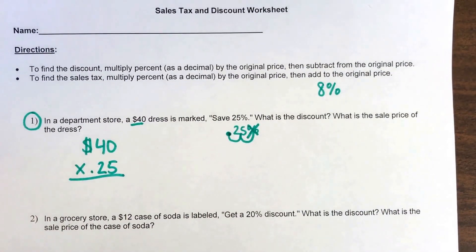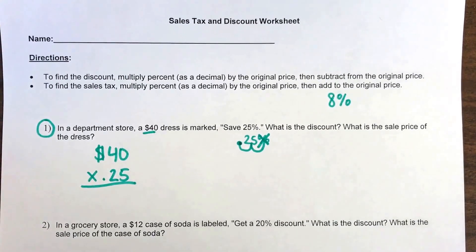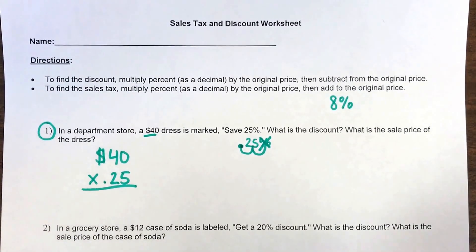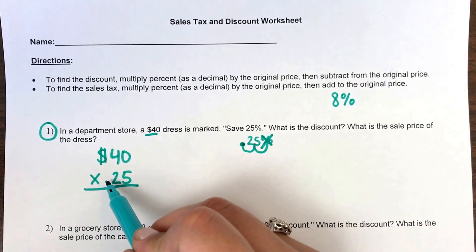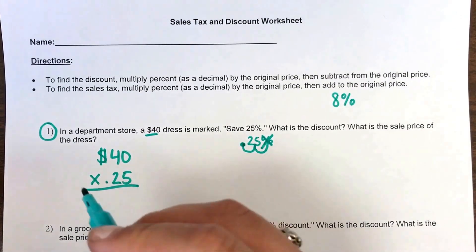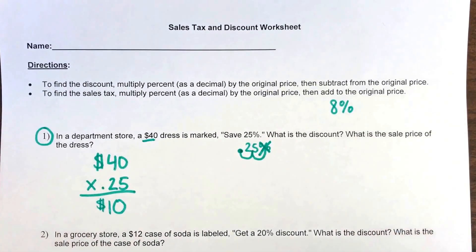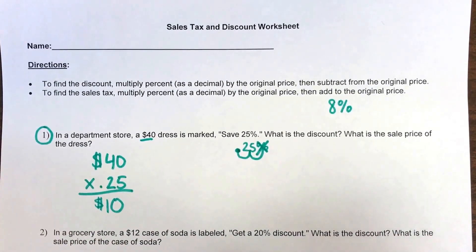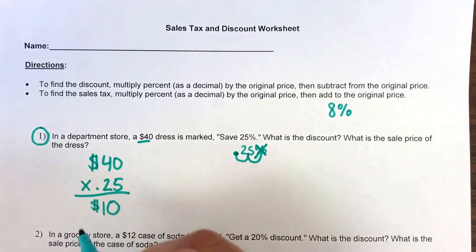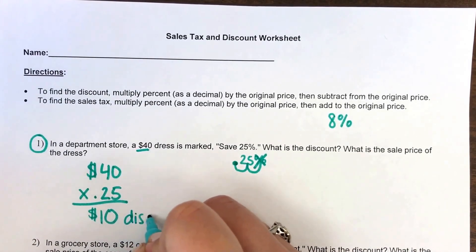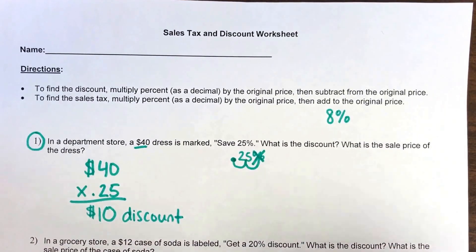Go ahead and show your work by doing the multiplication. If you use a calculator, do 40 times 0.25 — make sure you use that decimal — and you should come up with $10. Now that is not the price of the dress. That $10 is your discount — the money they're telling you to take off.